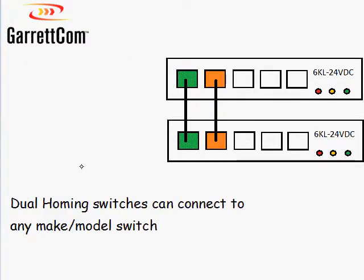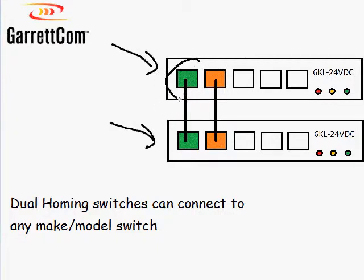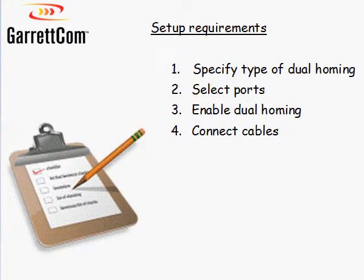You do need a Garrick Comm switch to set up dual homing. However, that switch can be connected to any make or model of switch you like — a Cisco switch, a Freecomm switch — it doesn't matter. Because dual homing is built on Ethernet standards, it can handle any make or model of connected switch.